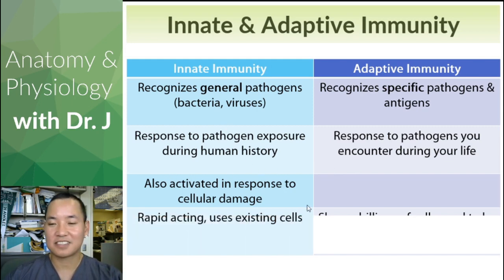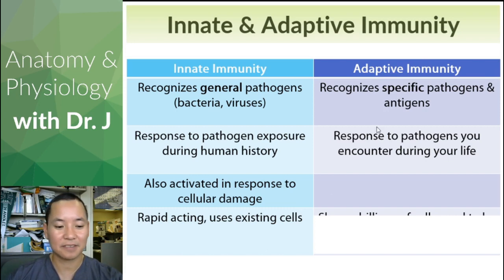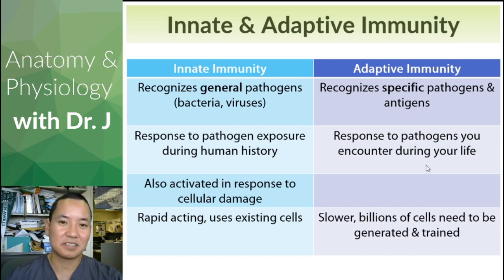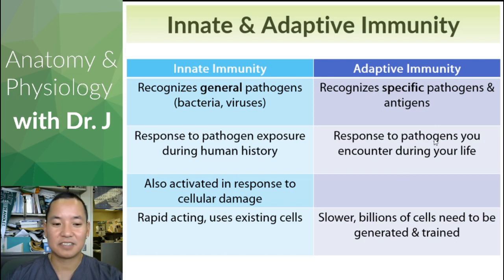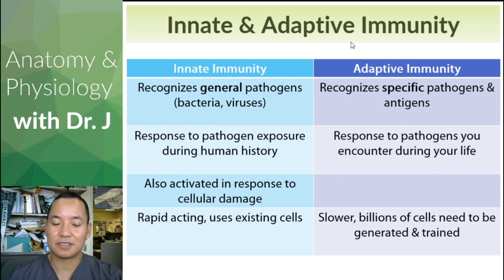Innate immunity uses existing cells — things like neutrophils, macrophages, and NK cells that are already circulating in your body; they're not produced just in response to a new pathogen. Whereas with adaptive immunity, it's slower — the cells need to be generated and trained to fight a new infection. This is why it takes a while to fight off a new infection you're not innately immune to.